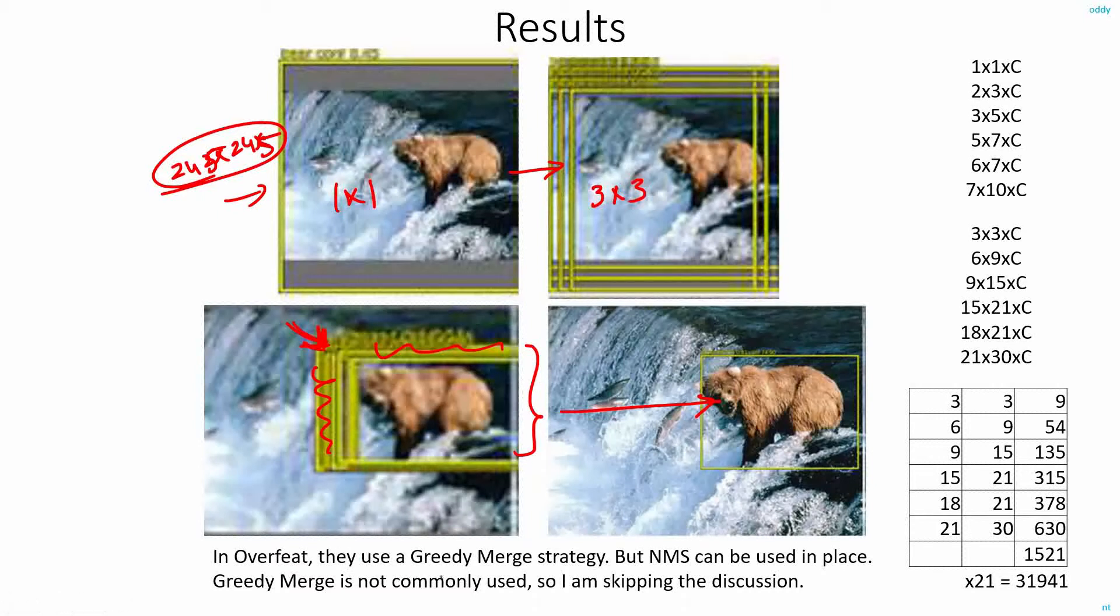But just remember that in OverFeat, they use a different technique to do the non-max suppression, that is, they use some greedy merge strategy. But I have not seen this technique used anywhere else. So I'm not going into details of how it is. If you are interested, you can just look into the paper.